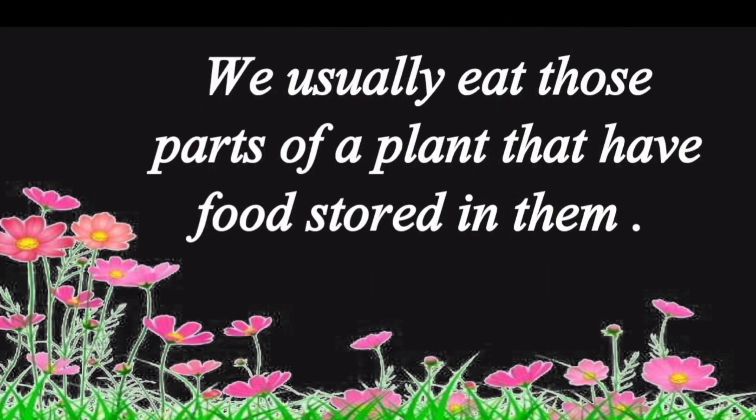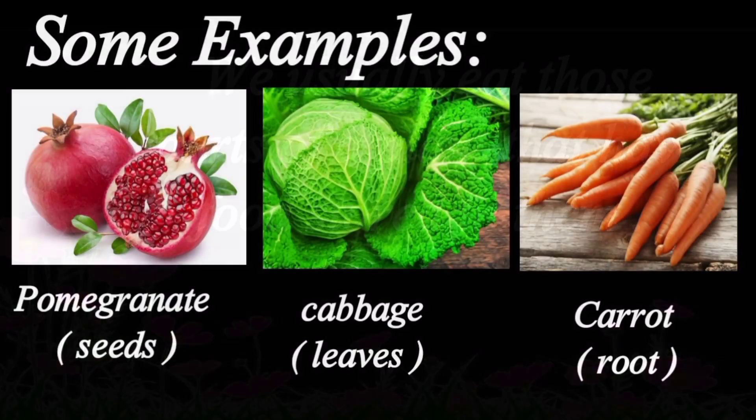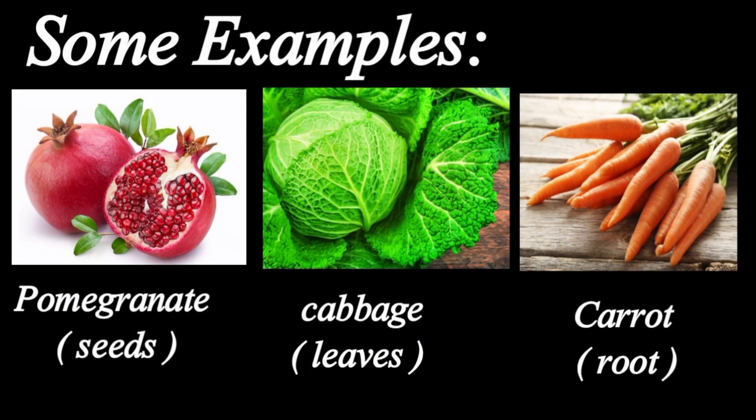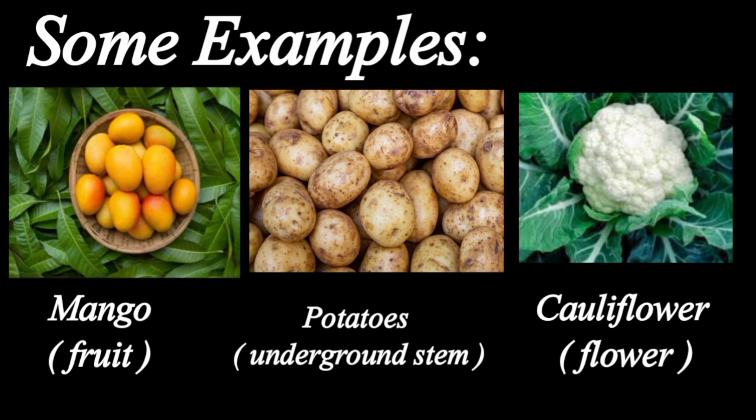We usually eat those parts of a plant that have food stored in them. Some examples: pomegranate seeds, cabbage leaves, carrot root, mango fruit, potatoes from underground stem, and cauliflower flower.